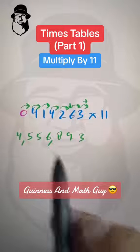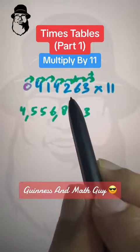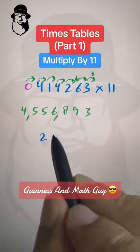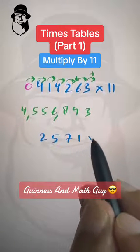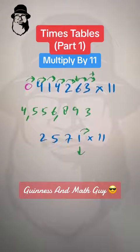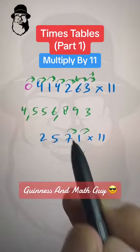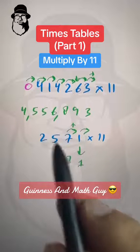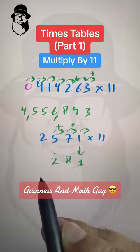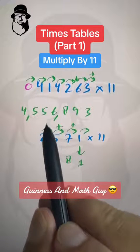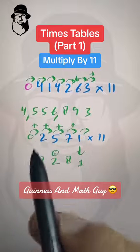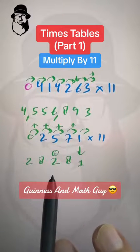And sometimes there are carries also. So let me put it a little above. And let's say we have 2, 5, 7, 1 times 11. Bringing 1 down. Sorry, not bringing 1. Adding 1 to its neighbor is still 1. And 7 plus 1 is 8. But when we do 5 plus 7, it's 12. So we put only 2 and put a dot here. That's it. Then we move on as it is. So 2 plus 5 is 7 plus this dot is 8. And there is 0 here in our mind. 0 plus 2 is 2. And that's our answer. 2, 8, 2, 8, 1.